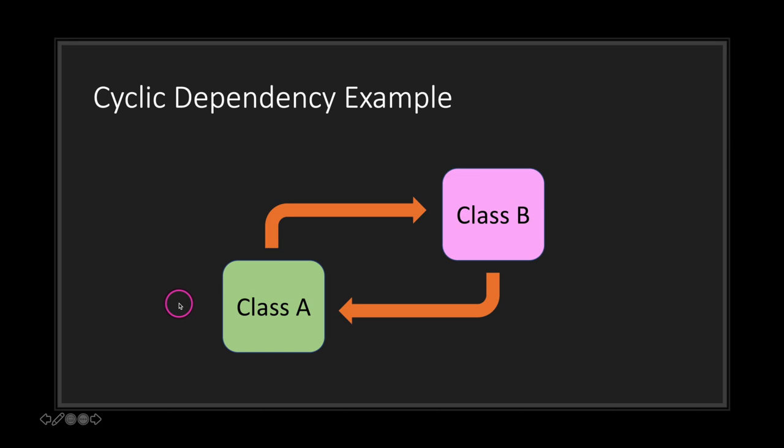This is what we can imagine a circular dependency to look like. Class A depends on Class B and Class B depends on Class A. This is basically the compiler's version of what came first, the chicken or the egg, and to the program it doesn't know how to solve this, resulting in an error or crash.